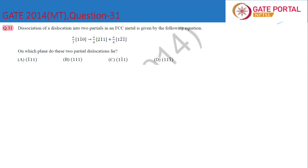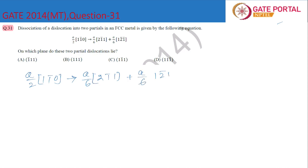In this video we will discuss question number 31 from GATE 2014. The question is about dissociation of a dislocation into two partials in an FCC metal, given by the equation: a/2 [21̄0] splits into a/6 [21̄1] plus a/6 [12̄1̄].